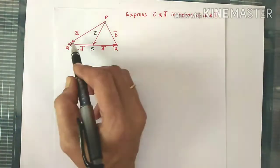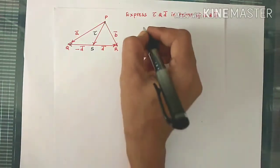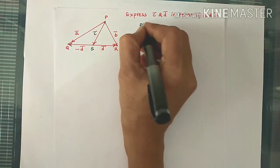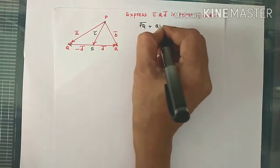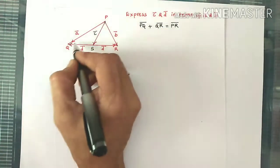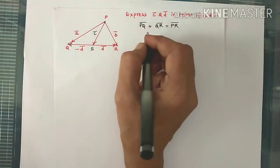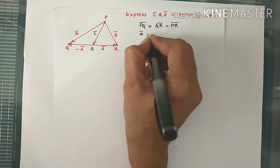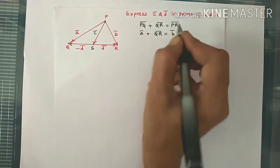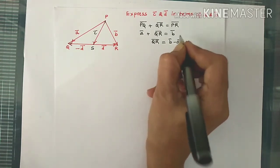So what we have given is PQ bar and PR bar. First let's find out QR bar. By vector addition, by triangle law of addition, PQ bar plus QR bar equals PR bar, as we have the direction PQ bar and PR bar. So PQ bar plus QR bar is PR bar. PQ bar is A bar, and PR bar is given as B bar. So QR bar becomes B bar minus A bar.